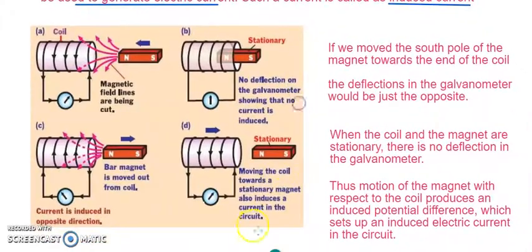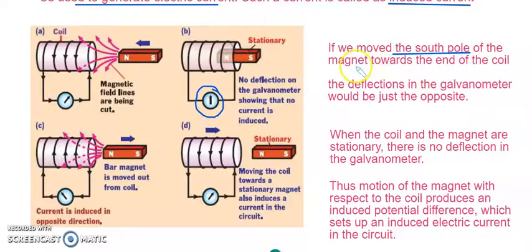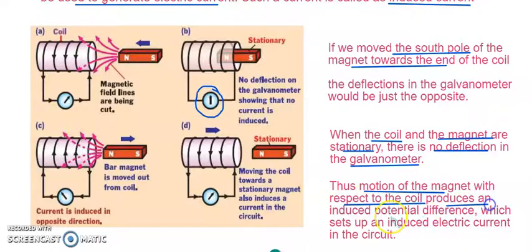Let us understand what was happening in the activity. When the magnet was placed stationary inside the coil of conductor, no deflection. When it was placed outside and stationary, no deflection. When it was being pulled towards the conductor, there was a deflection. When the north pole was brought towards it, deflection was towards the left; when pulled away, it was in the opposite direction. When poles were changed from north to south, the galvanometer deflected in the opposite direction. So, motion of the magnet with respect to the coil produces an induced potential difference, and this sets up an induced electric current in the circuit.